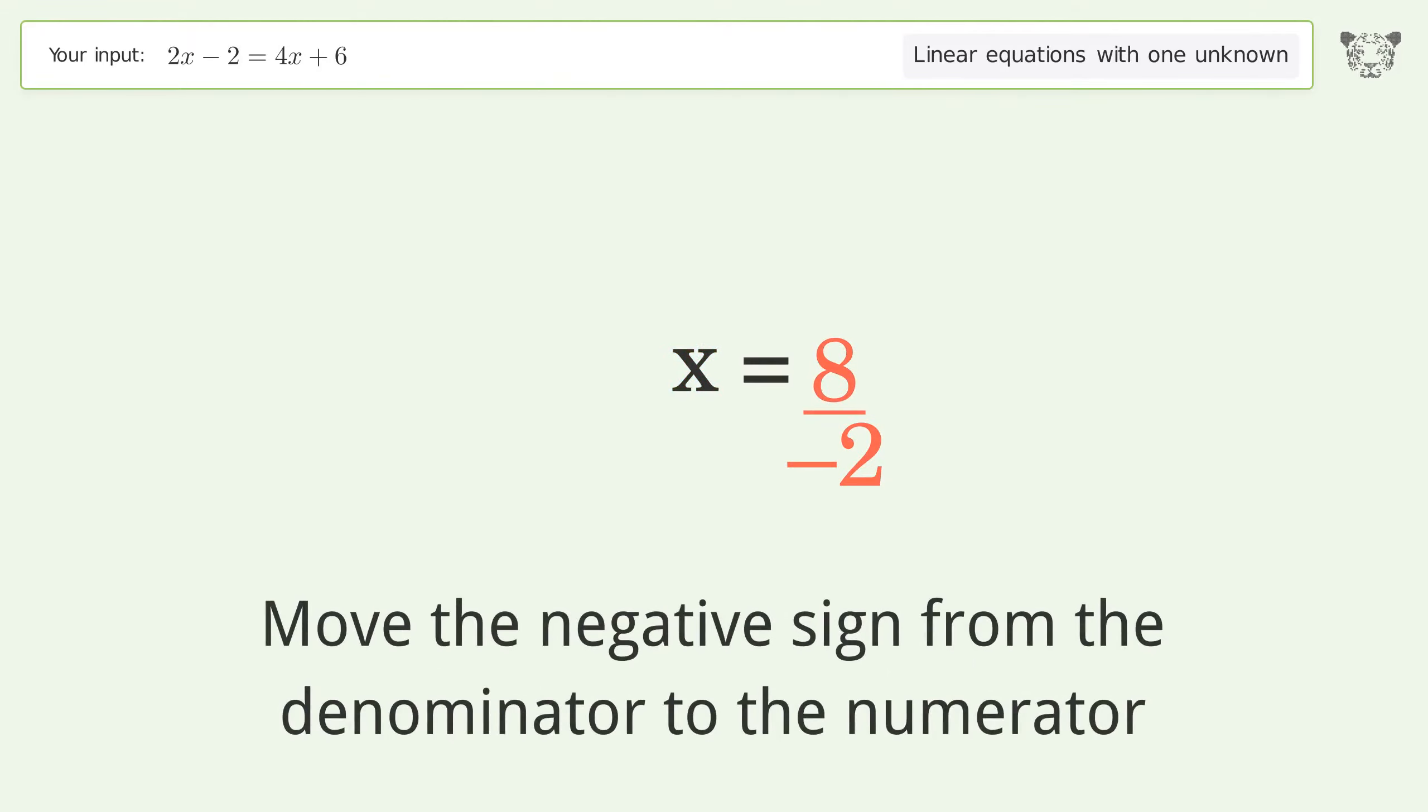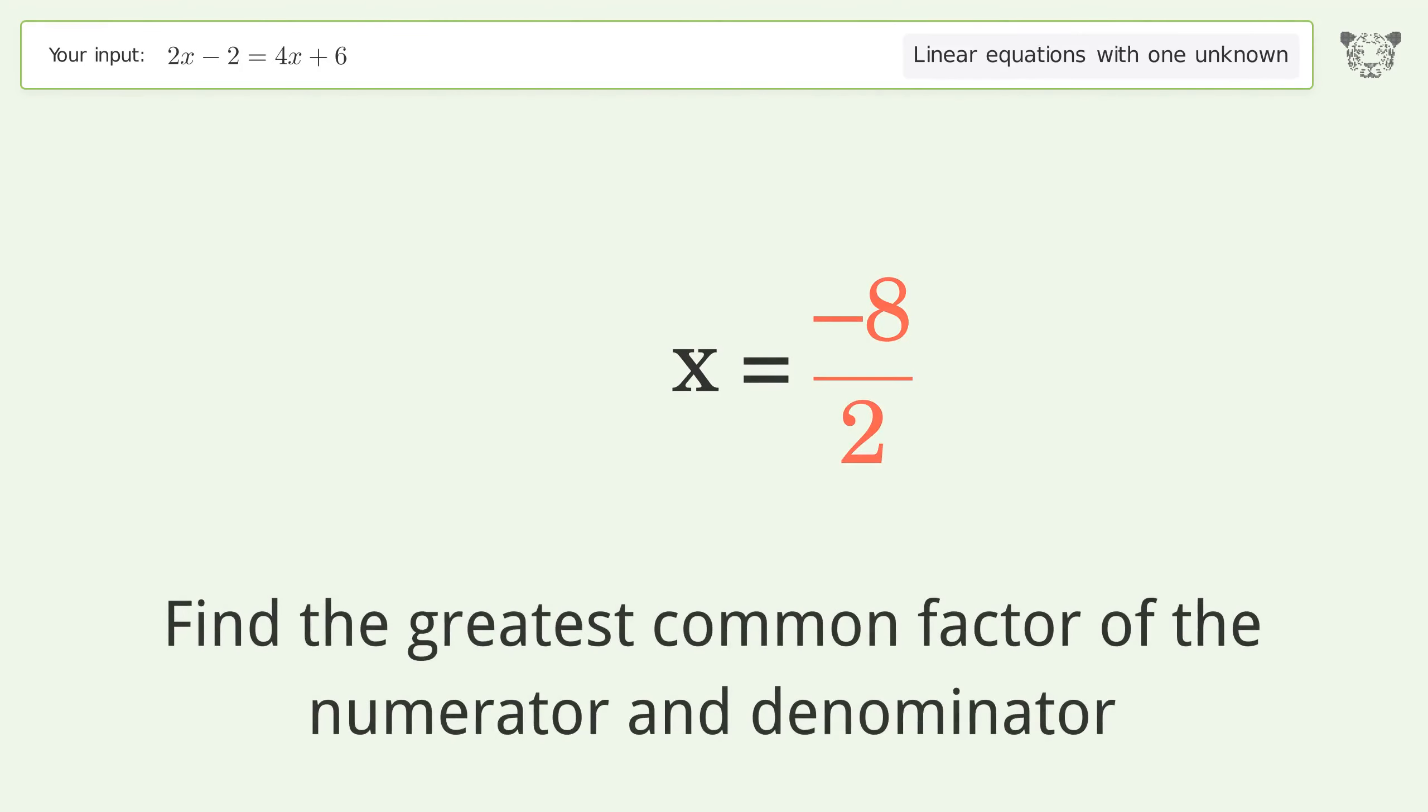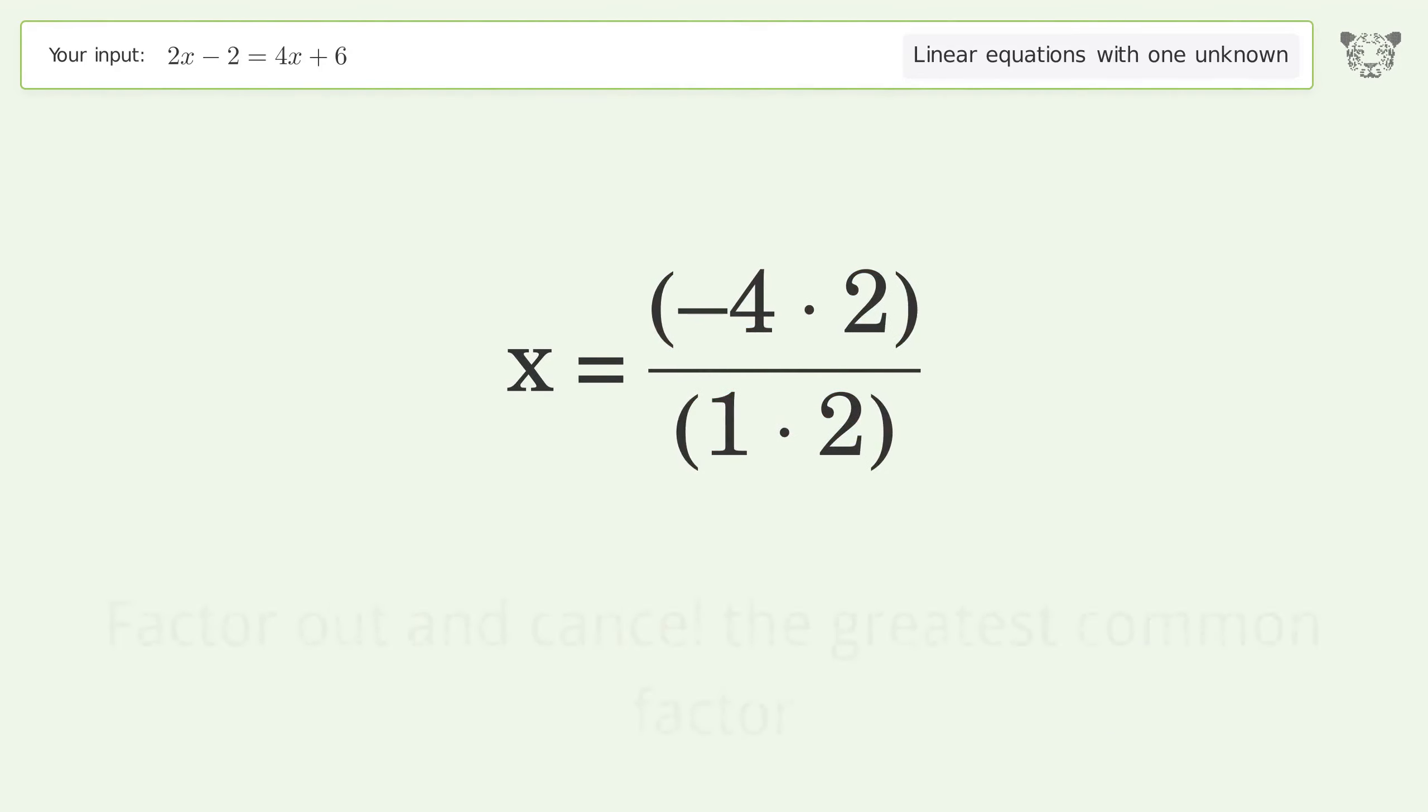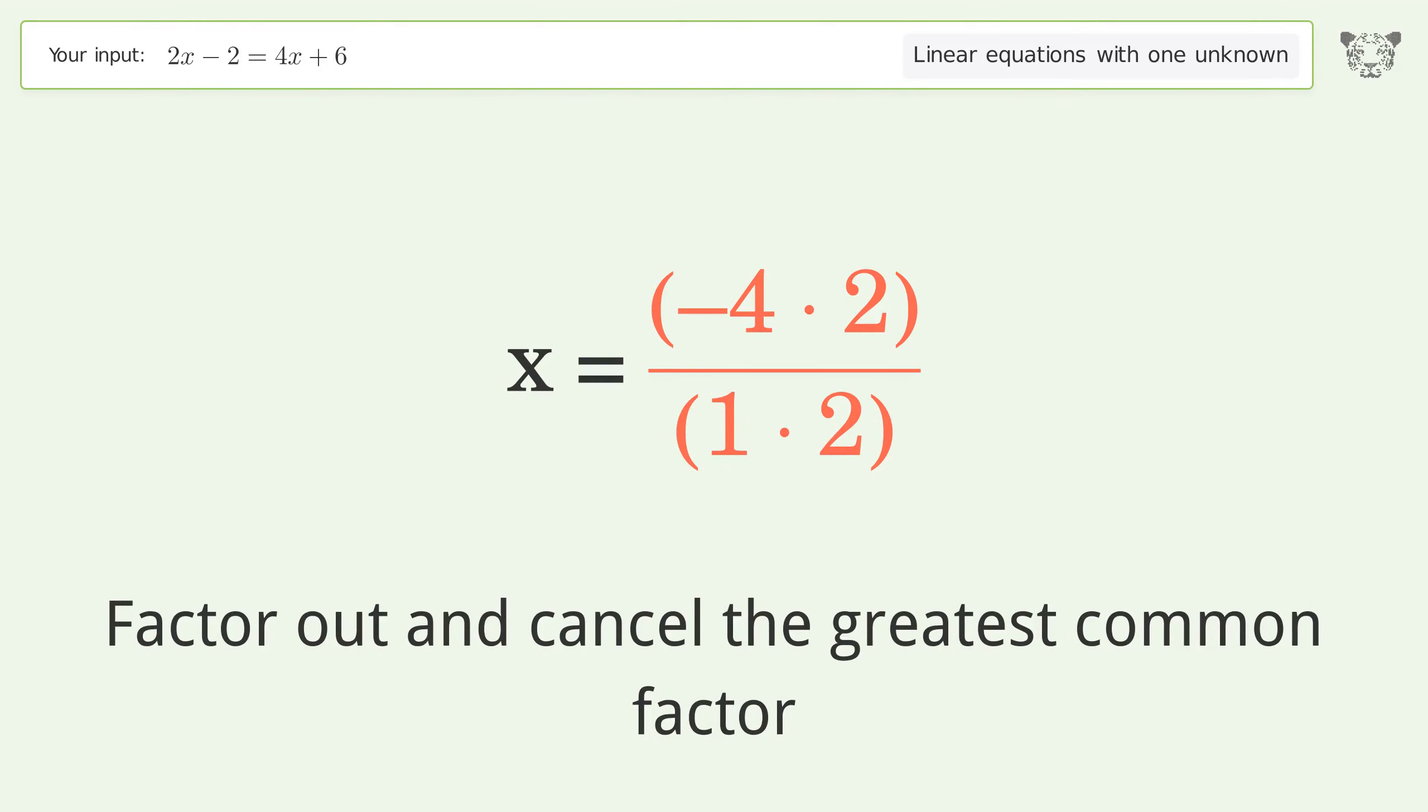Move the negative sign from the denominator to the numerator. Find the greatest common factor of the numerator and denominator. Factor out and cancel the greatest common factor.